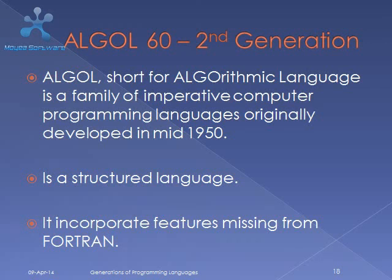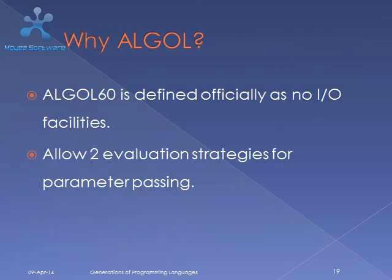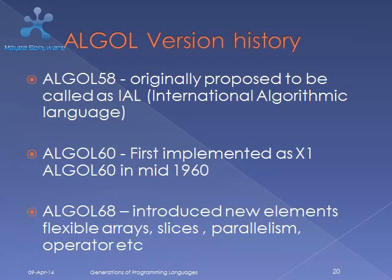ALGOL 60, second generation. ALGOL, short for Algorithmic Language, is a family of imperative computer programming languages originally developed in the mid-1950s. It is a structured language that incorporates features missing from Fortran. ALGOL 60 is defined officially with no input-output facilities and allows evaluation strategies for parameter passing. Version history: ALGOL 58, originally proposed to be called the International Algorithmic Language; ALGOL 60, first implemented as X1 ALGOL 60 in mid-1960; ALGOL 68, which introduced new elements including flexible arrays, slices, parallelism, and operator definitions.